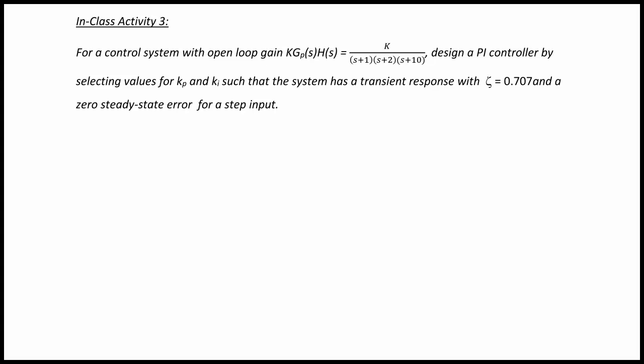In-Class Activity 3: For a control system with open loop gain K·Gp(s)·H(s), which equals K over (s+1)(s+2)(s+10), design a PI controller by selecting values for Kp and Ki such that the system has a transient response with ζ = 0.707 and a zero steady-state error for a step input.